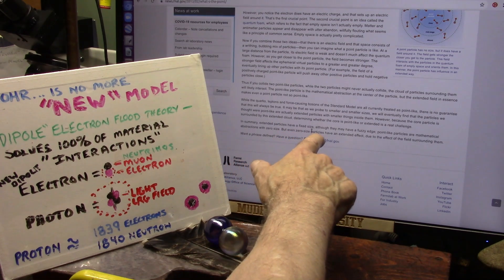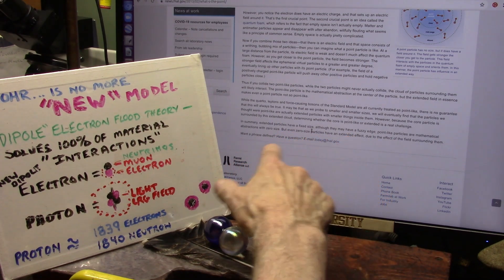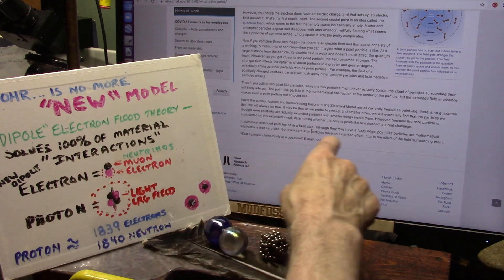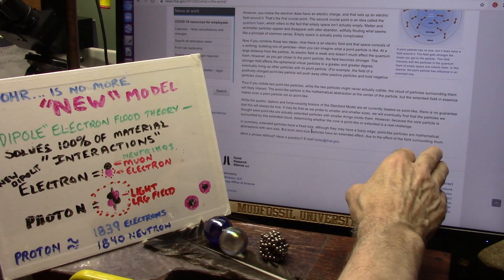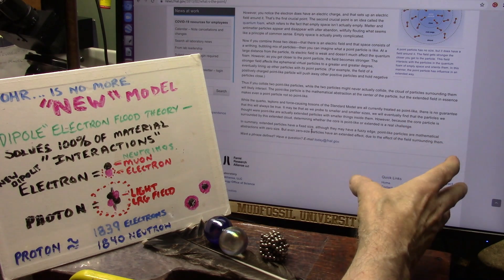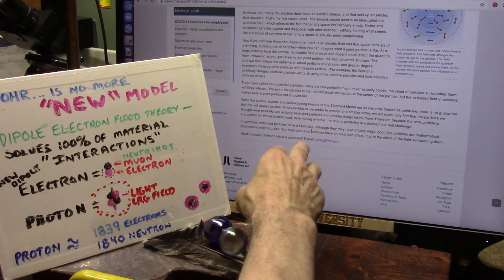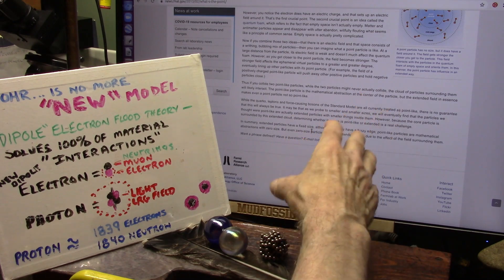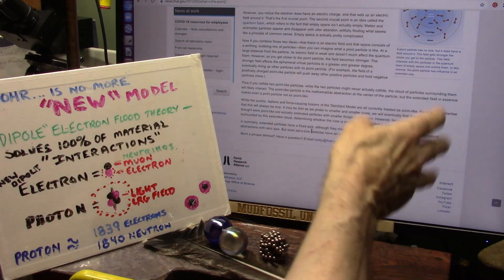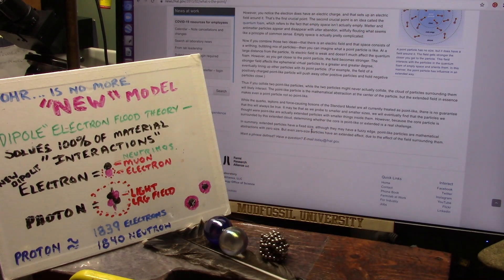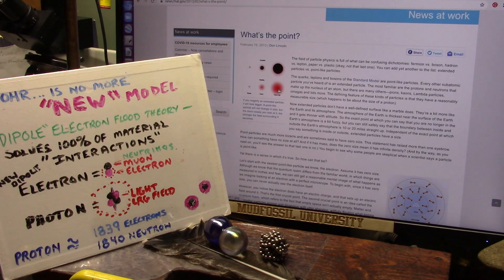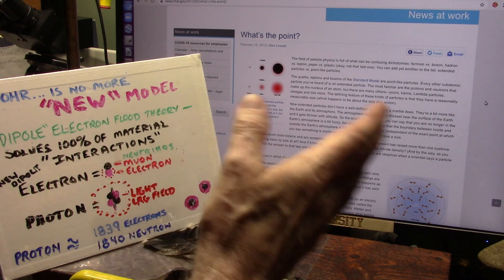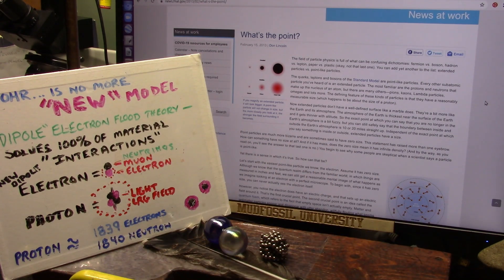He says, even the zero size particles have an extended field, which they do. They have a huge field around them. And he says it's due to the effect of the field surrounding them. Surrounding what? Zero size particles, you know, there must be something there. But anyway, I agree, or he agrees with me. I have shown them. They've seen them. They just didn't know where they came from. I know exactly where they came from, and we could squirt them out all day long using the technology that I have shown.